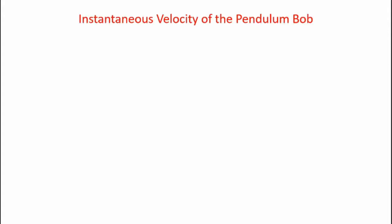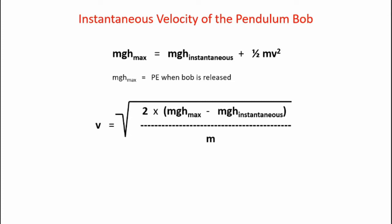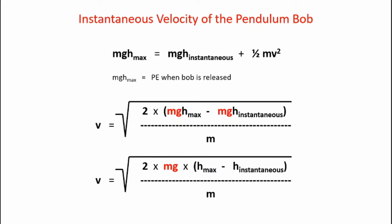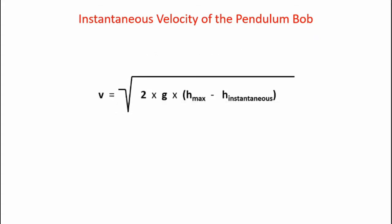We've seen how to calculate the instantaneous height of the pendulum bob and thus the instantaneous potential energy. We can use that to calculate the instantaneous velocity of the pendulum bob as it swings. Mathematically, the maximum potential energy mgh_max equals the sum of potential and kinetic energy as the bob swings. Applying basic algebra and canceling like terms, the velocity equals the square root of 2 times g times the difference between the maximum height and the instantaneous height.